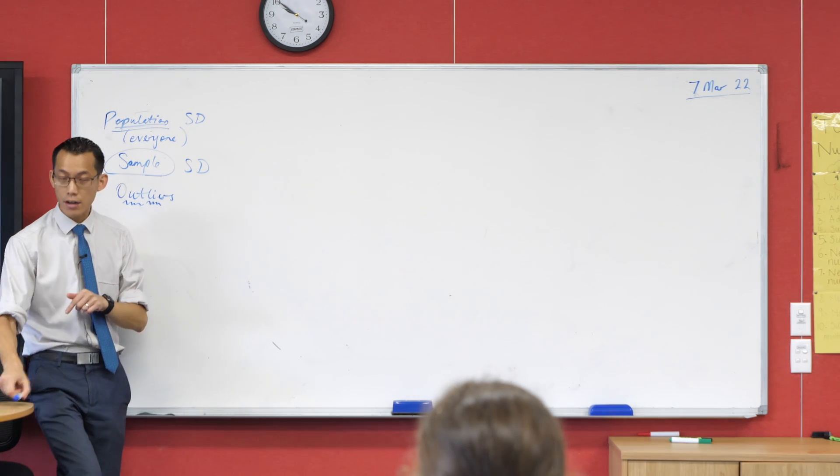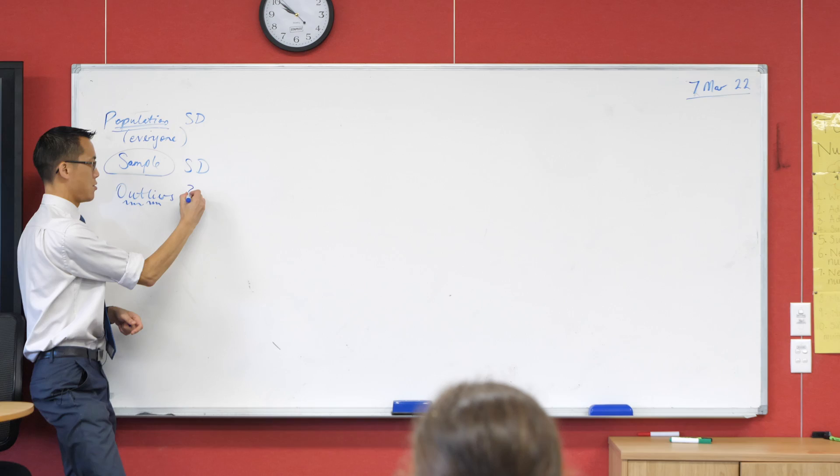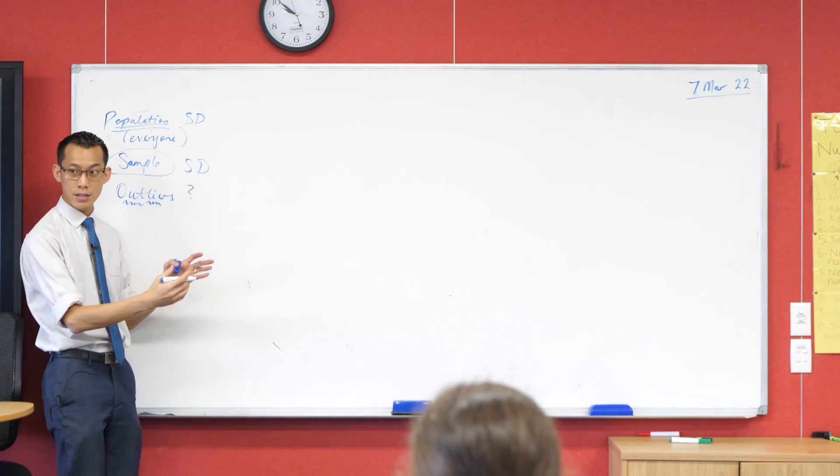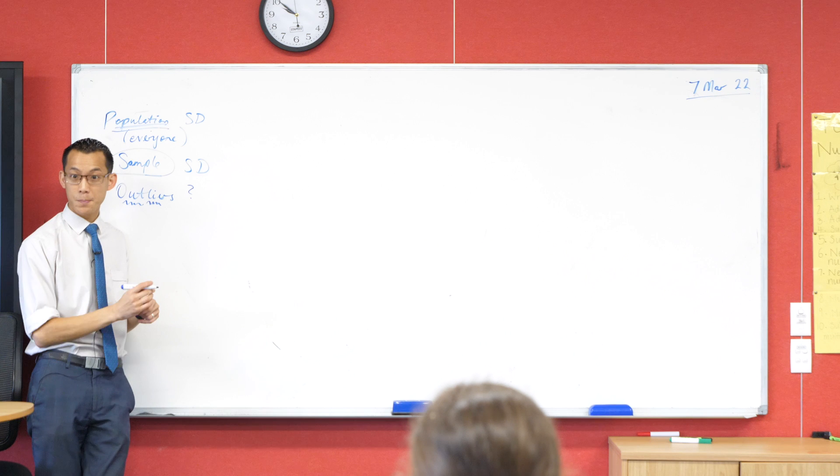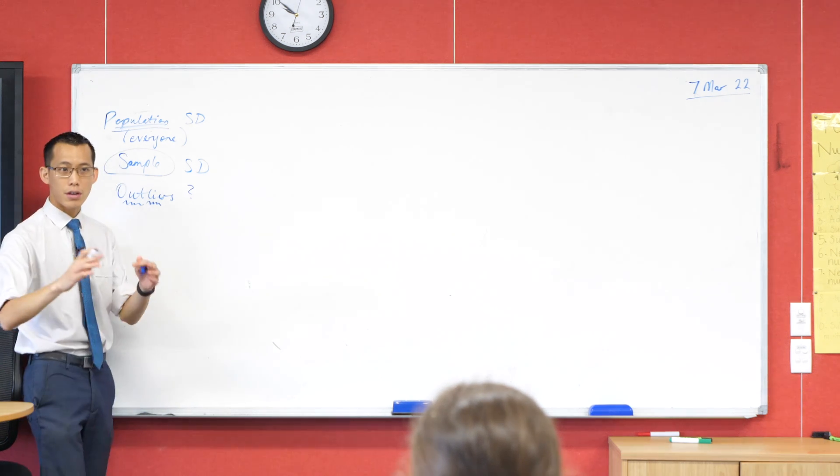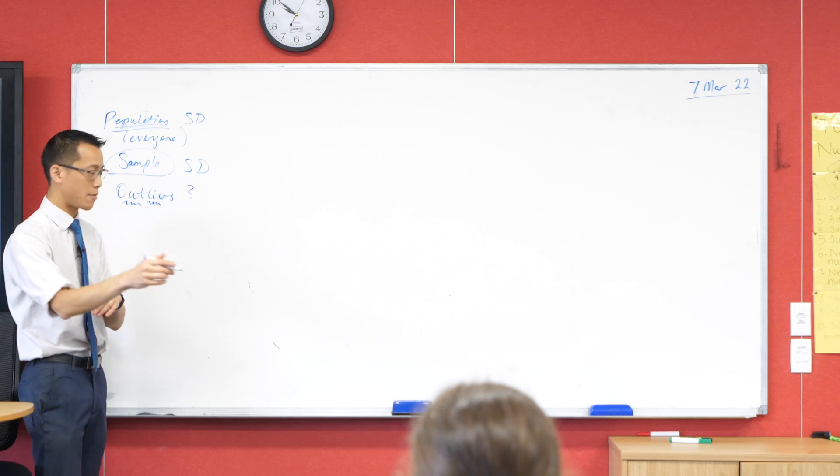So how do we work out what an outlier is? You guys actually learned at least one way, not just like look at the data and have a guess. You learned a way to calculate it. It's an R1. Q1 take away 1.5. Okay, well done, Bao.